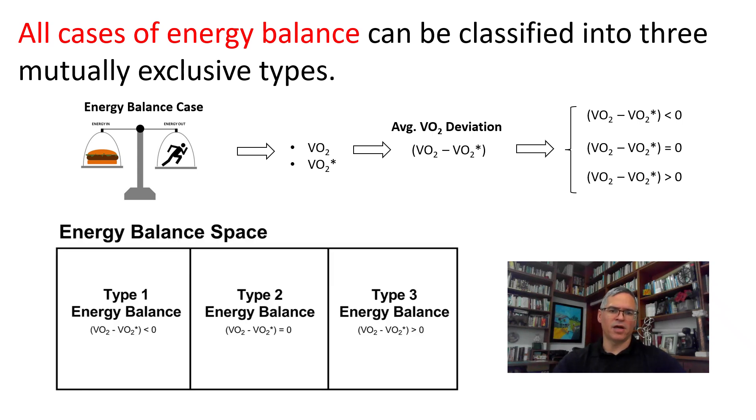The type 1 energy balance set, which is the collection of all energy balance cases where the mean VO2 deviation is negative. The type 2 energy balance set, which is the collection of all energy balance cases where the mean VO2 deviation is zero. The union of these three sets is what I call the energy balance space.